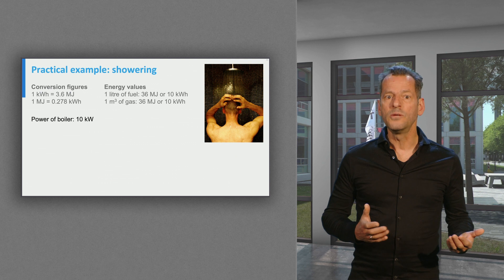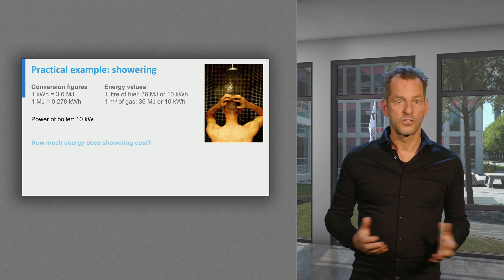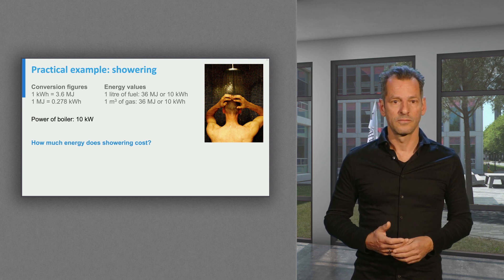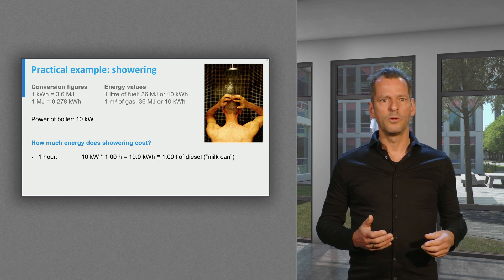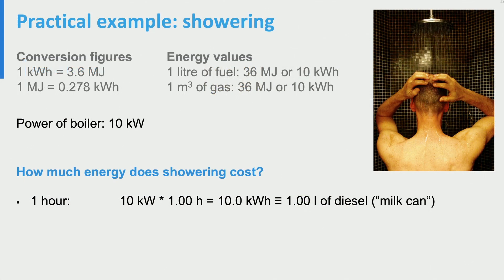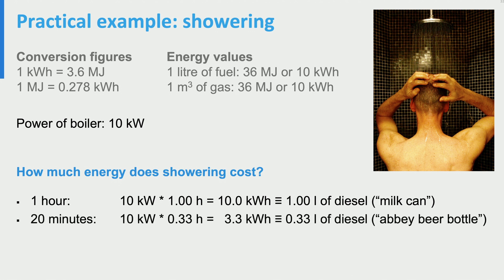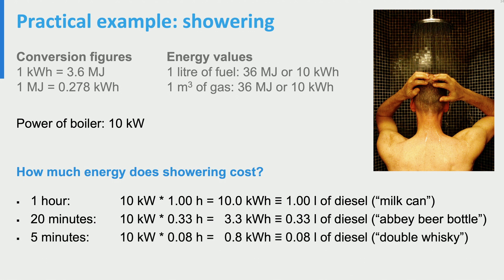Knowing all the basics, we can simply calculate the amount of energy required for showering. The ones really addicted to showering, who spend an hour on warm water, will use the power of the boiler for one hour, costing 10 kilowatt-hours, or one liter of diesel. Think of taking a milk carton filled with diesel to the shower. A somewhat more modest showerer spending 20 minutes uses 3.3 kilowatt-hours — you could say a beer bottle from a Belgian abbey filled with diesel. If you are environmentally conscious, or a fast showerer, you will need a double whisky size of diesel, and that saves a lot of fuel compared to 20 minutes of showering or more.